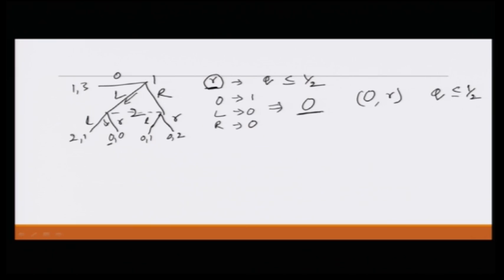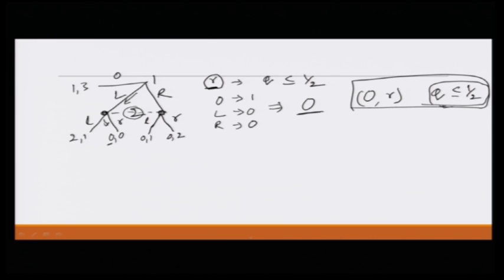We get best response of player 1 is O and player 2 is playing R, with Q ≤ 1/2. You might wonder about the belief update. Notice that player 1 plays O, so Bayes rule cannot be applied — the game never reaches the information set containing these two nodes. So we cannot update the belief, and any belief player 2 starts with is fine as long as it is consistent. If player 2 starts with Q ≤ 1/2, this is a perfect Bayesian equilibrium. Note that (O, R) with Q > 1/2 would not be a PBE, because then player 2 should play L rather than R.